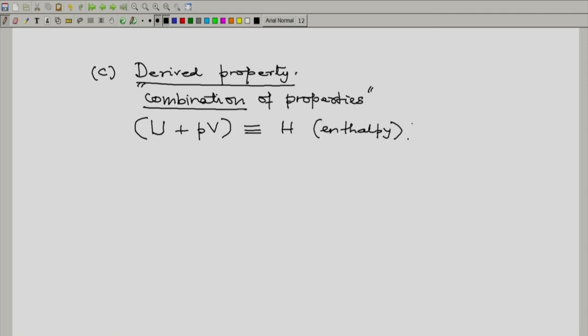There are other properties which we will come across later as derived properties. For example, the Gibbs function, the Helmholtz function. Another illustration of a derived property are compressibilities or expansion coefficients.